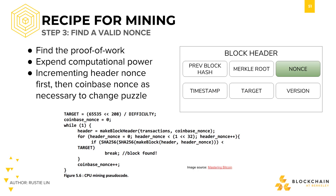You may have noticed in the pseudocode that there are two different nonces: the header nonce and the coinbase nonce. Keep in mind that the nonce in the header is a reasonably small number, and this means that a powerful device can run through all the nonce possibilities within a second.